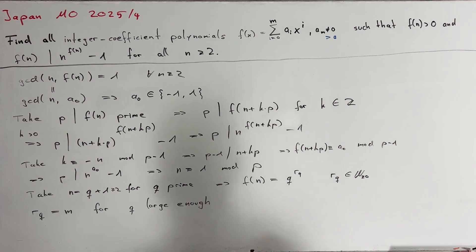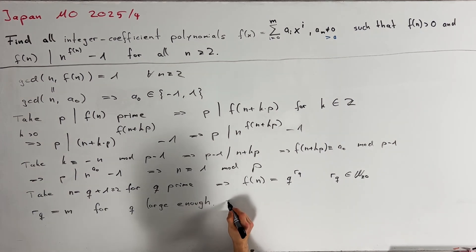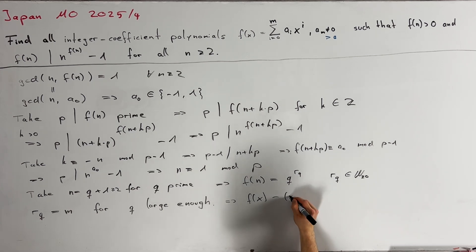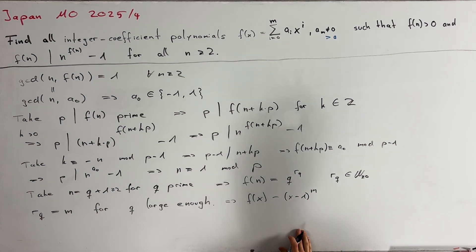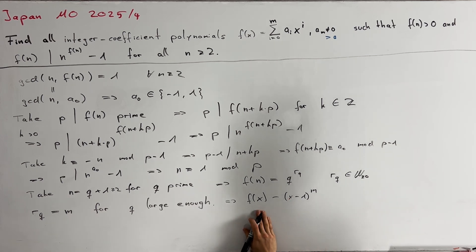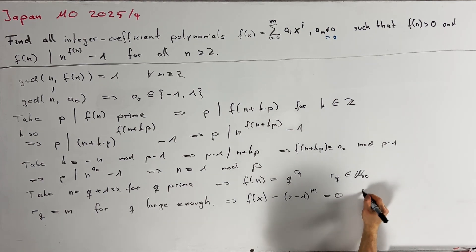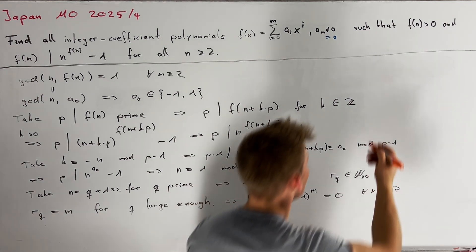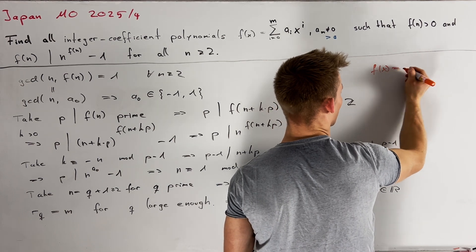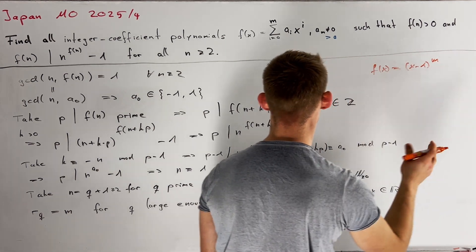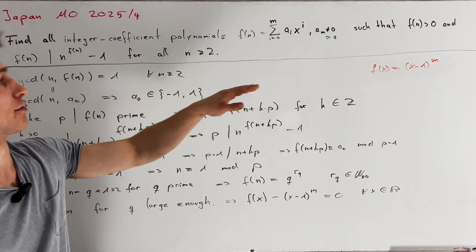In conclusion, we see that the polynomial f(x) minus (x-1)^m has all sufficiently large prime numbers q as roots. Therefore, this polynomial must be the zero polynomial, equal to 0 for all x. So we must have f(x) equals (x-1)^m. Let's now erase the blackboard and check if these solutions are valid.